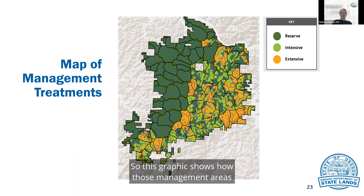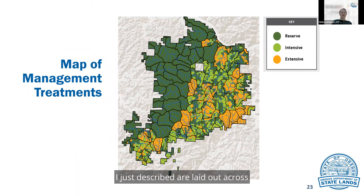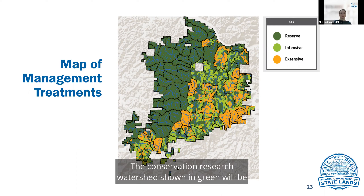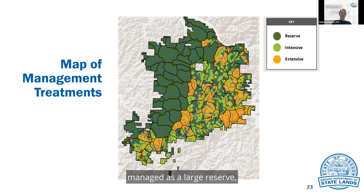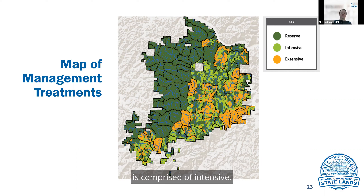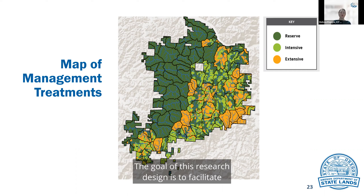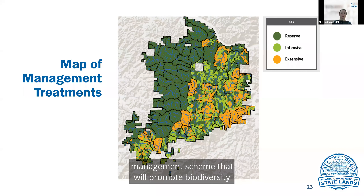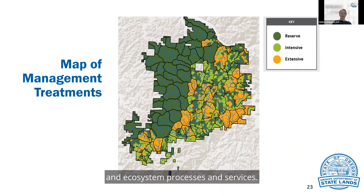This graphic shows how those management areas I just described are laid out across the Elliott State Research Forest. The conservation research watershed, shown in green, will be managed as a large reserve, whereas the management research watershed, which is the patchwork of colors to the right, is comprised of intensive, extensive, and reserve treatments, including RCAs. The goal of this research design is to facilitate a long-term experiment to determine an optimal forest management scheme that will promote biodiversity and ecosystem processes and services.